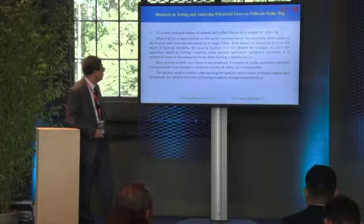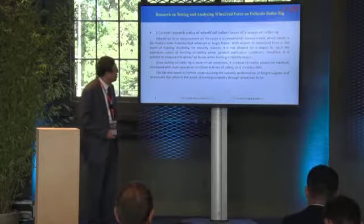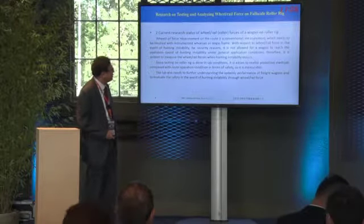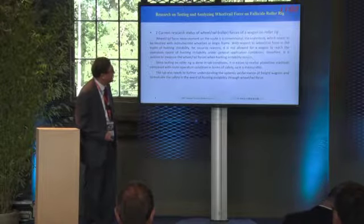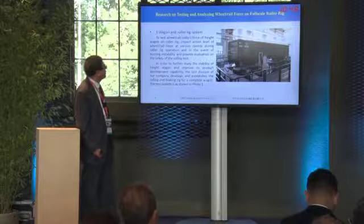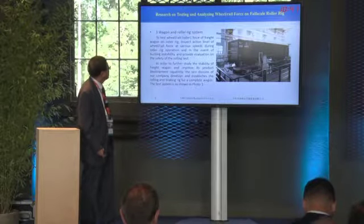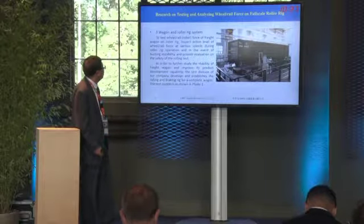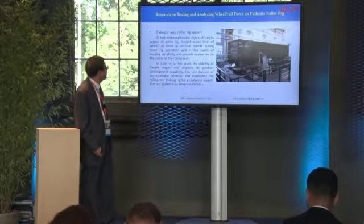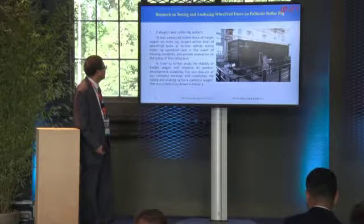Since testing on a roller rig is done in lab conditions, it is easier to realize protective methods compared with road operation conditions in terms of safety, so it is measurable. The lab also needs to further understand the systemic performance of freight wagons and to evaluate safety in the event of hunting instability through wheel rail force. To test the wheel rail force of a freight wagon on a roller rig, we inspect the action level of wheel rail force at various speeds during roller rig operation and in the event of hunting instability, and provide evaluation on the safety of the rolling test.